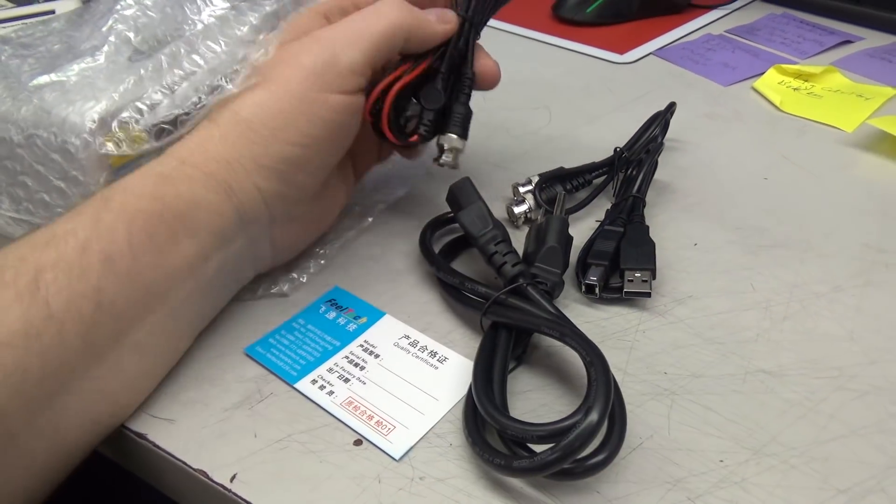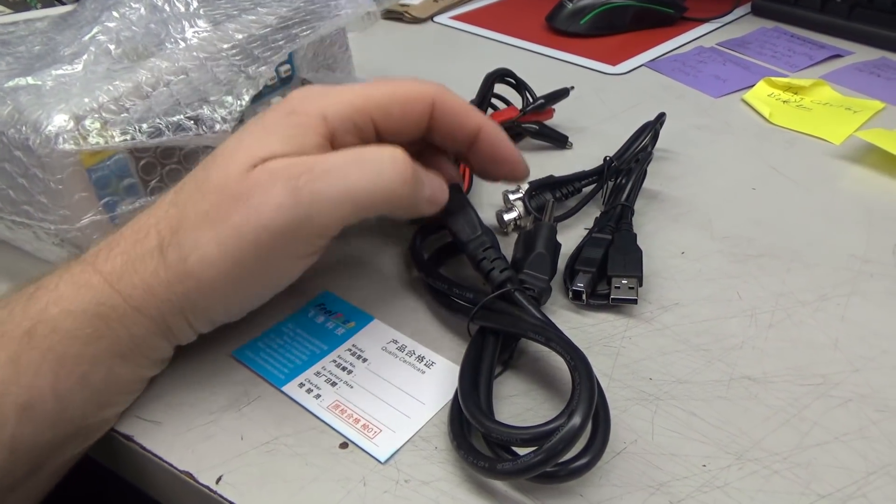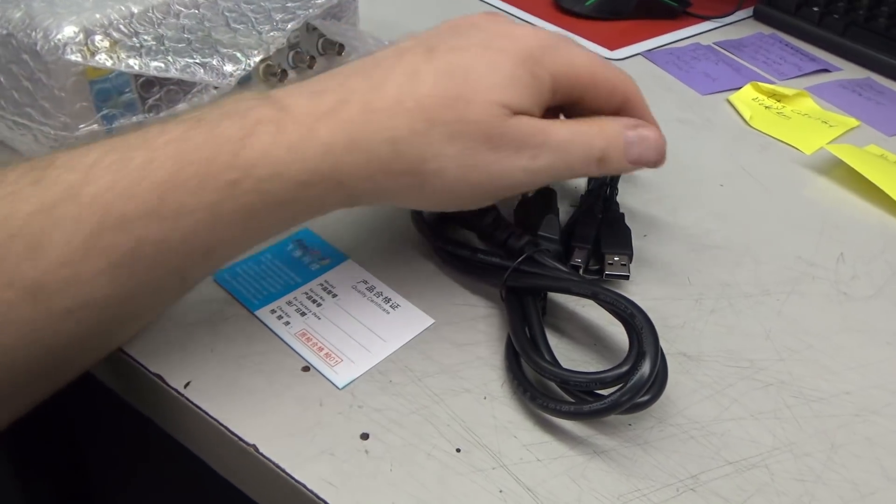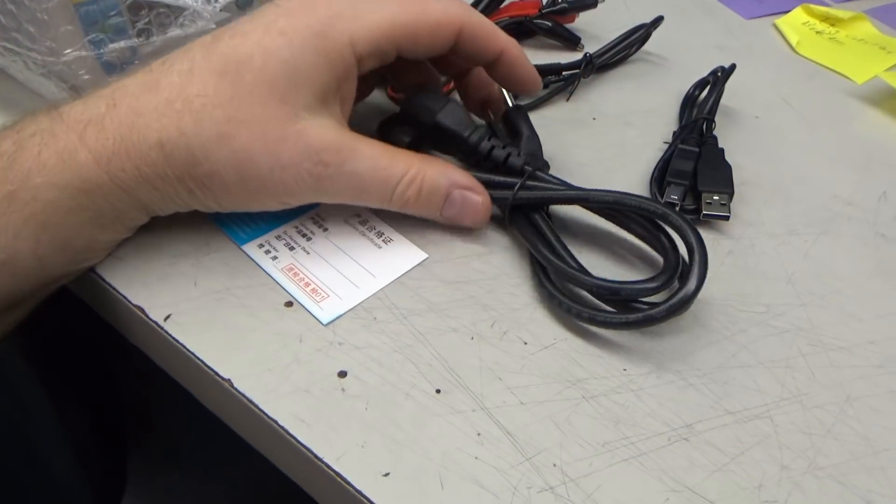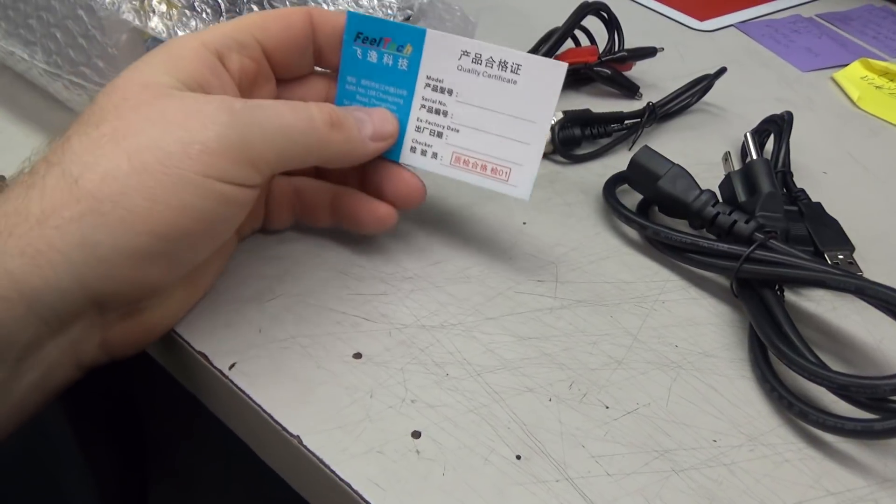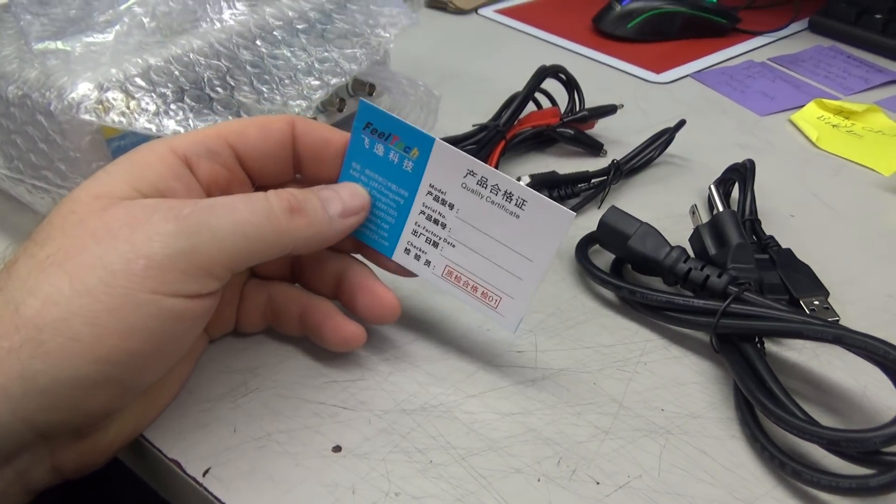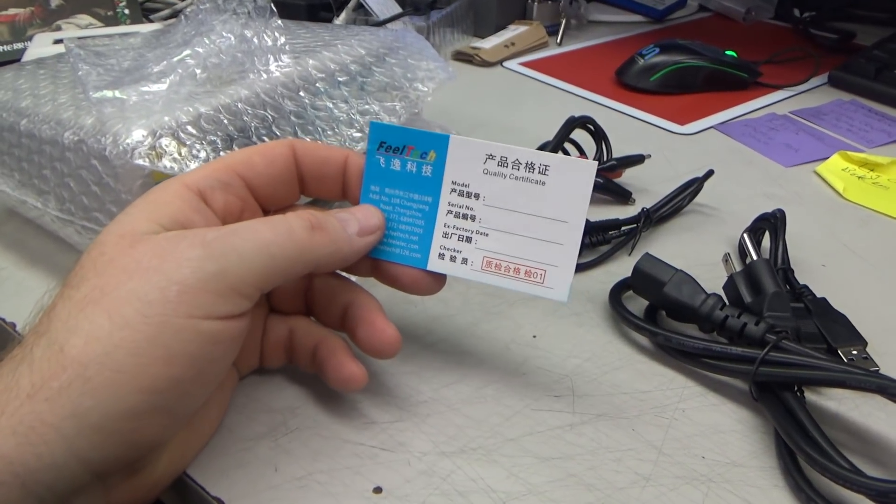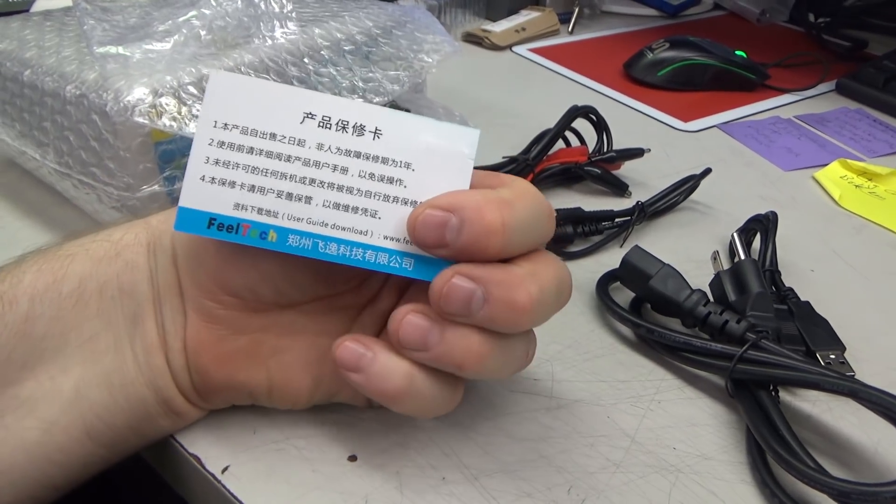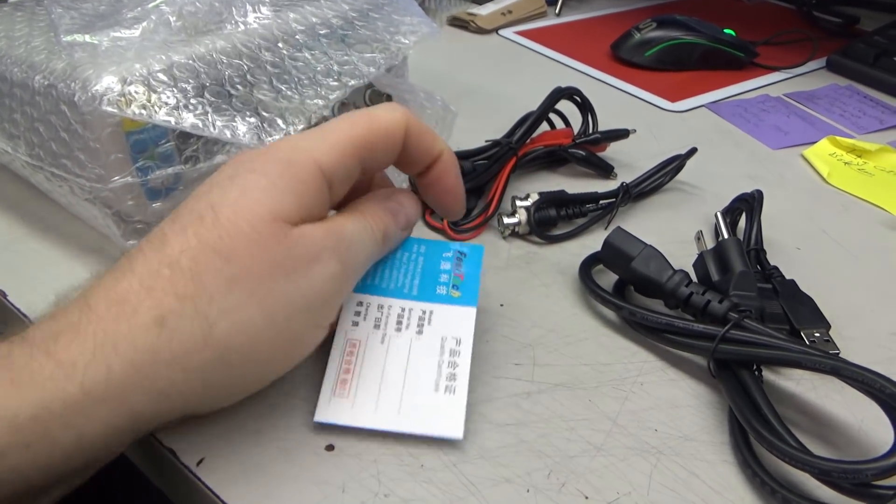Inside the package the unit comes with two sets of alligator probes, 150 ohm cable, USB A to B cable, power cord for the US which is how I ordered it, and a card saying Fieldtech is the company that manufactured it with a link to their website to download the user guide.